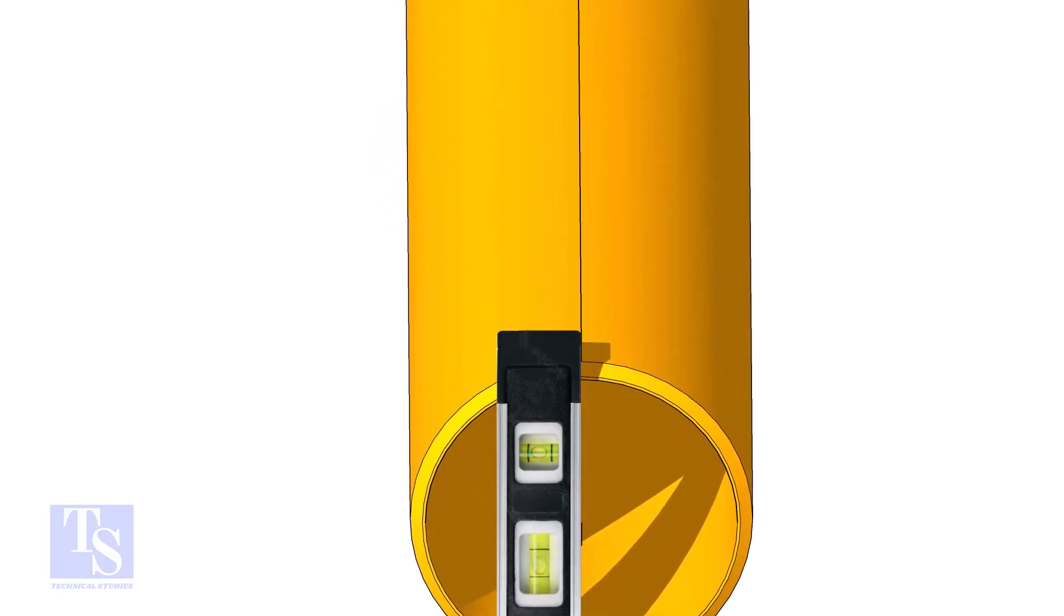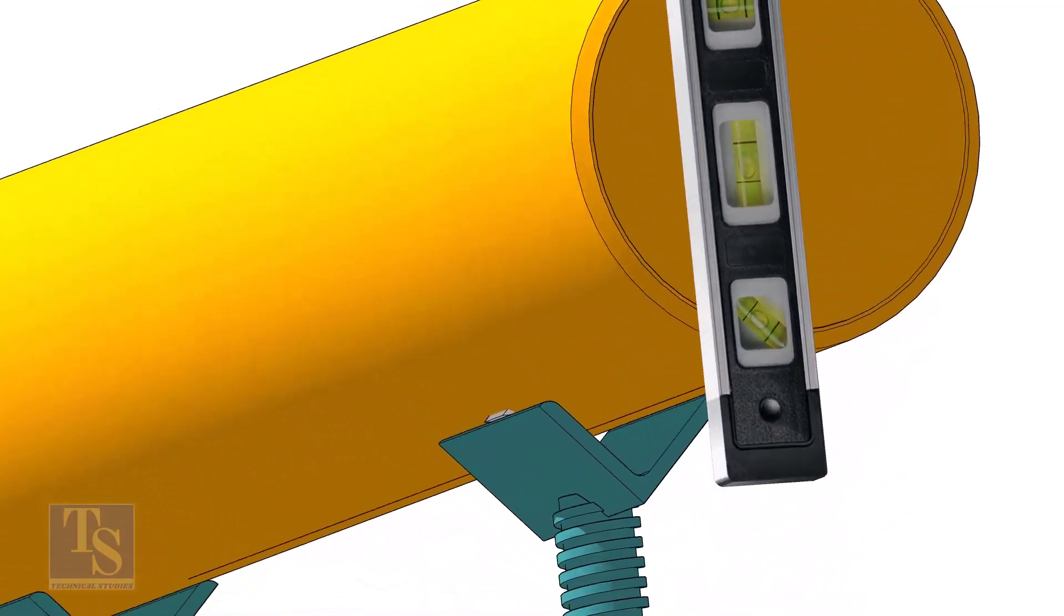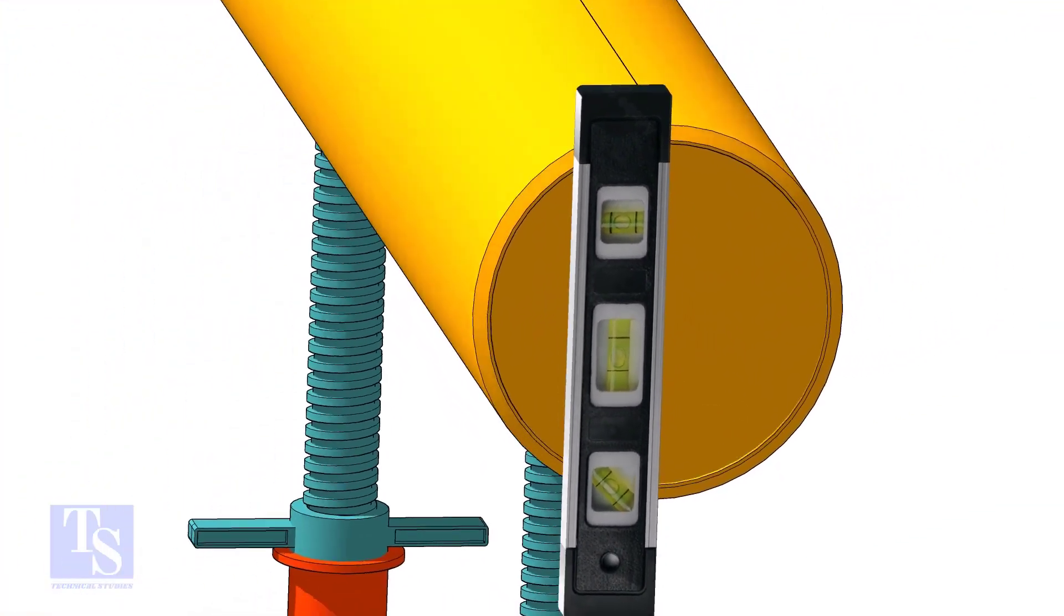Level the pipe horizontally and vertically as shown. After leveling, arrest the pipe to stop it from rotating.